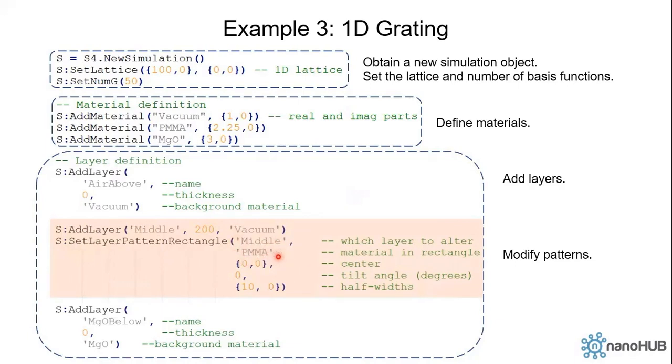We want to alter the middle layer. We want to put the PMMA pillar at the center, which is zero. Tilt angle is zero, and half width is 10 in the x direction and zero in the y direction.